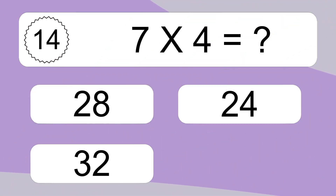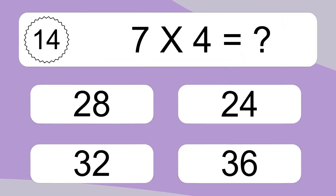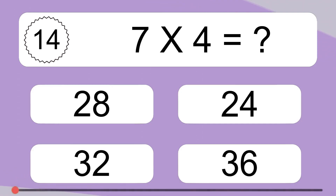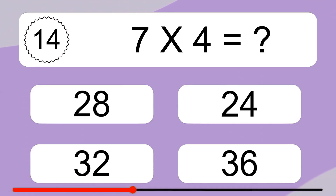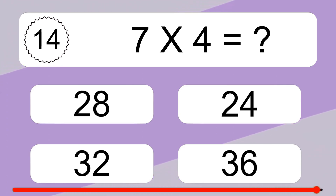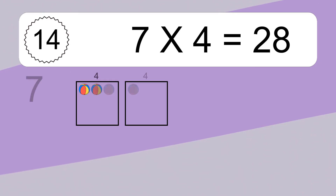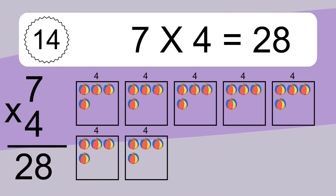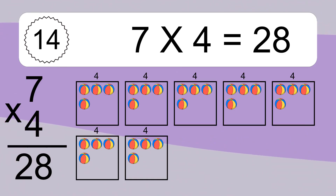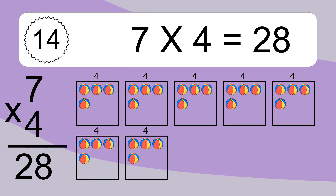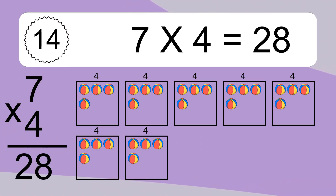7 times 4 equals what? 7 times 4 equals 28. We have 7 boxes, and each box has 4 colorful balls inside. If you count all the balls in all the boxes together, you will have 7 times 4 balls. This equals 28 balls.